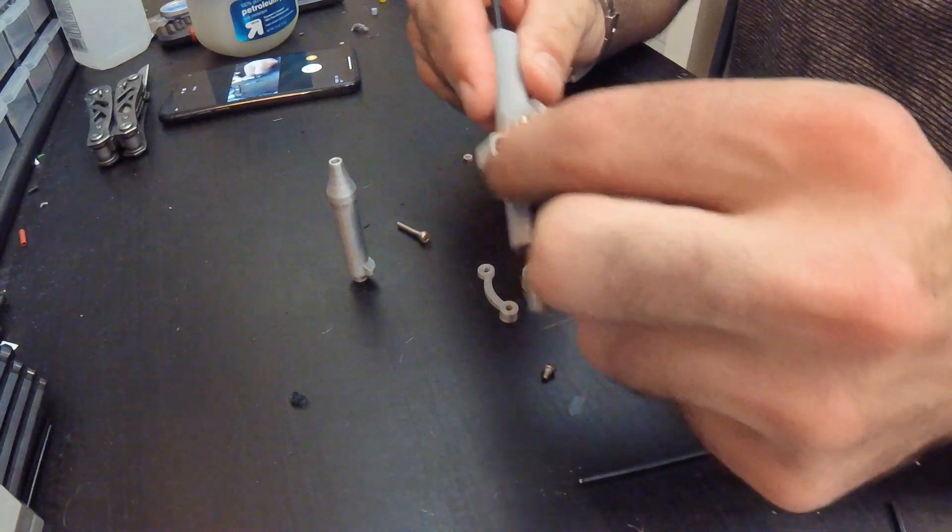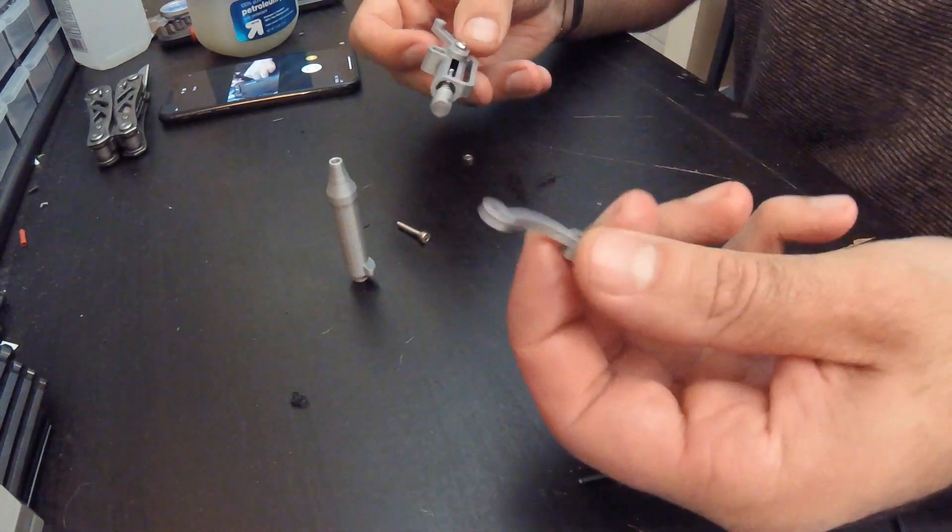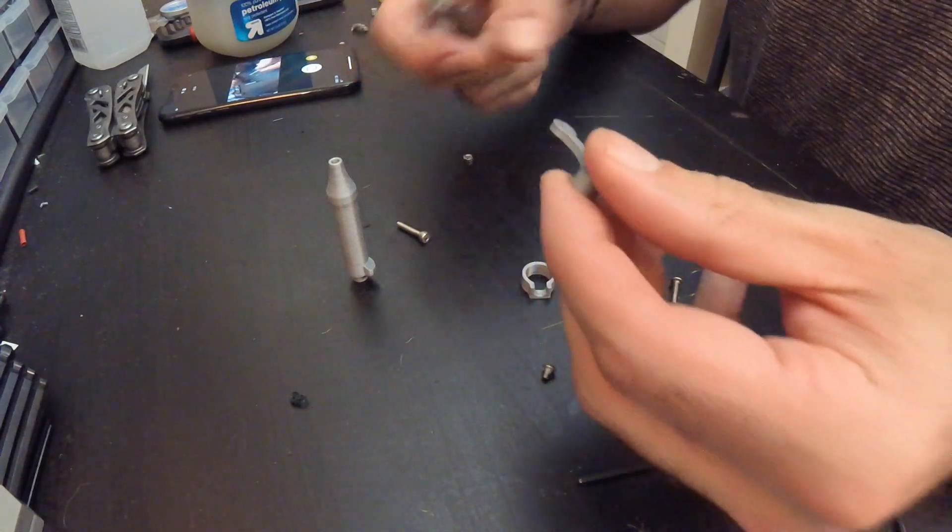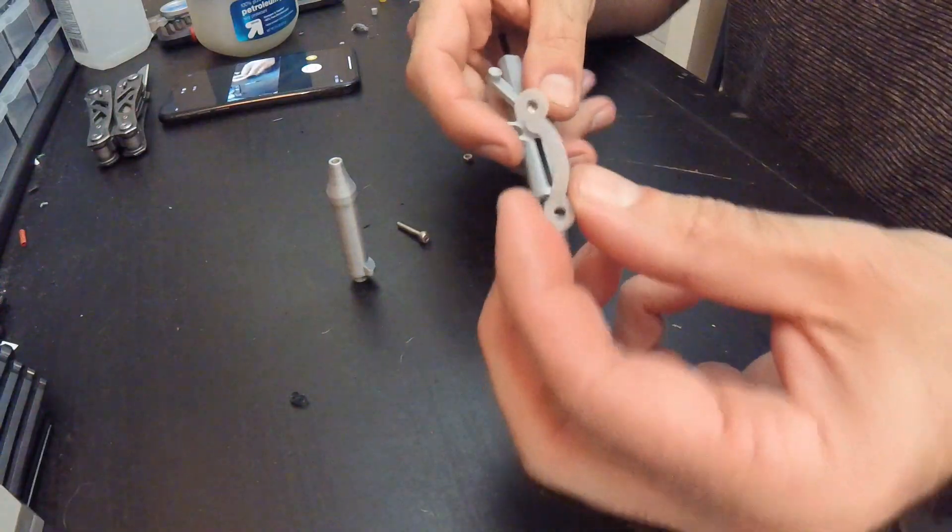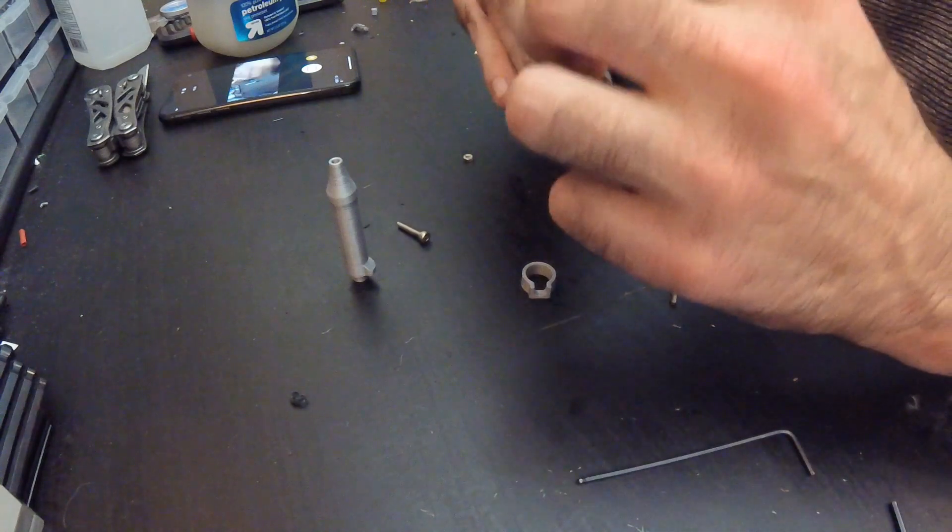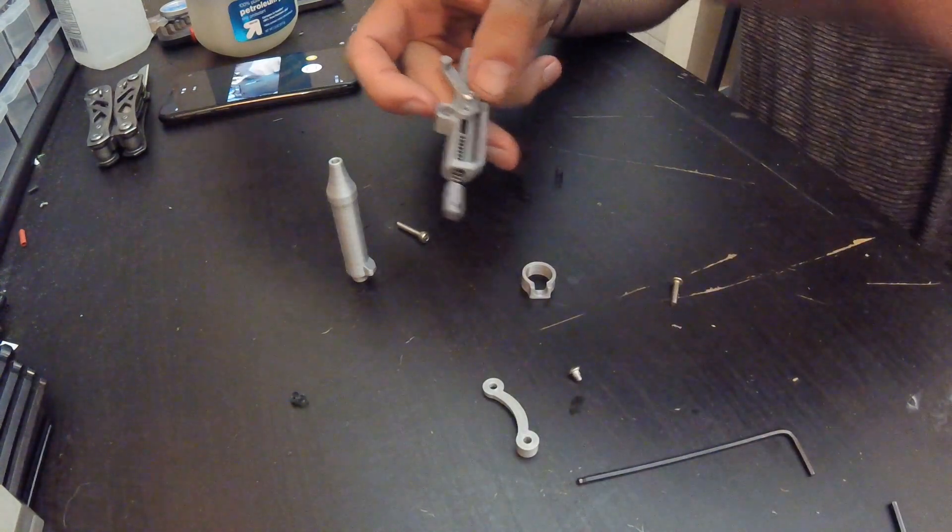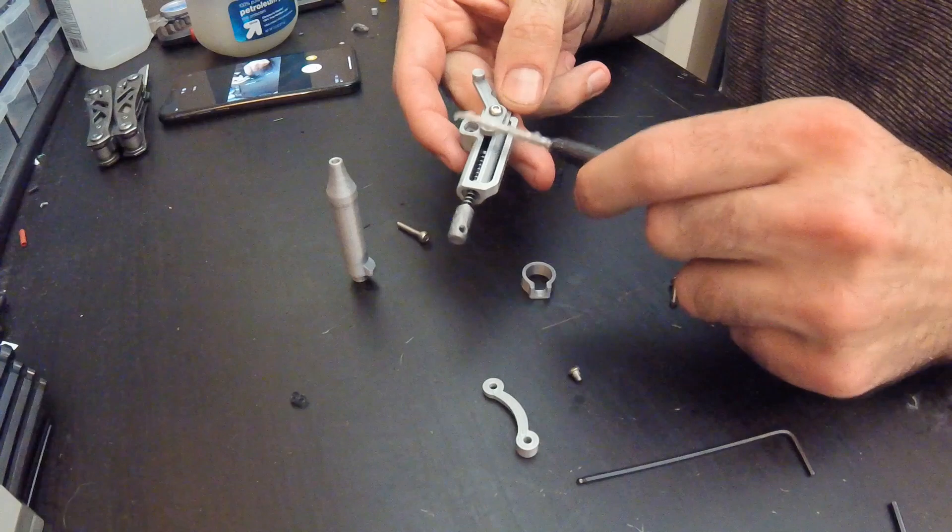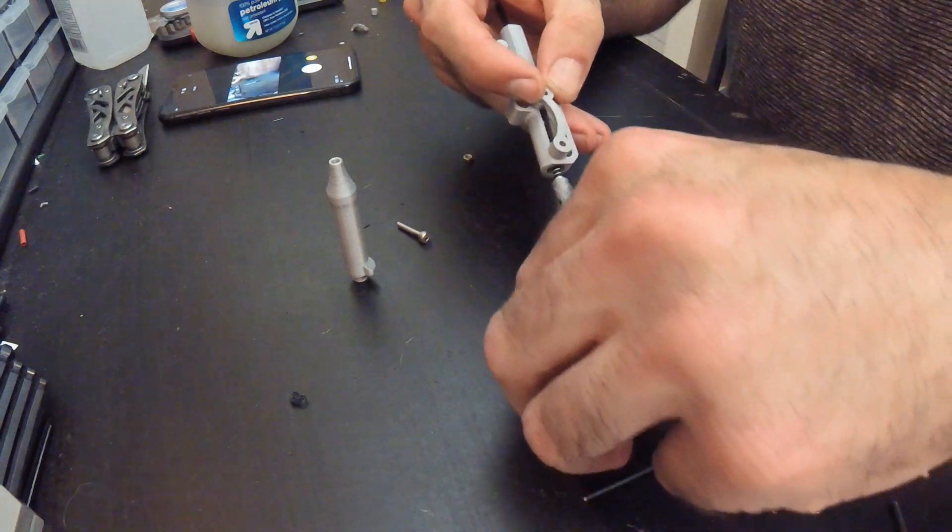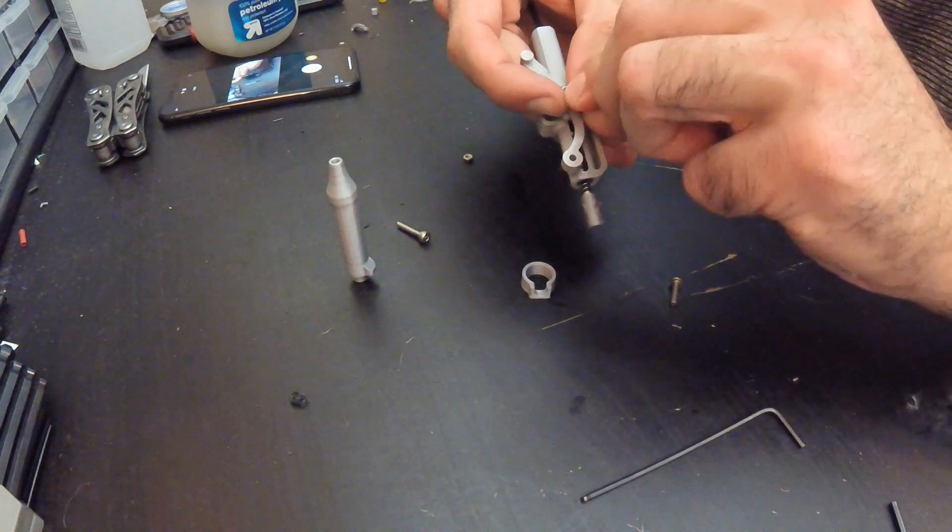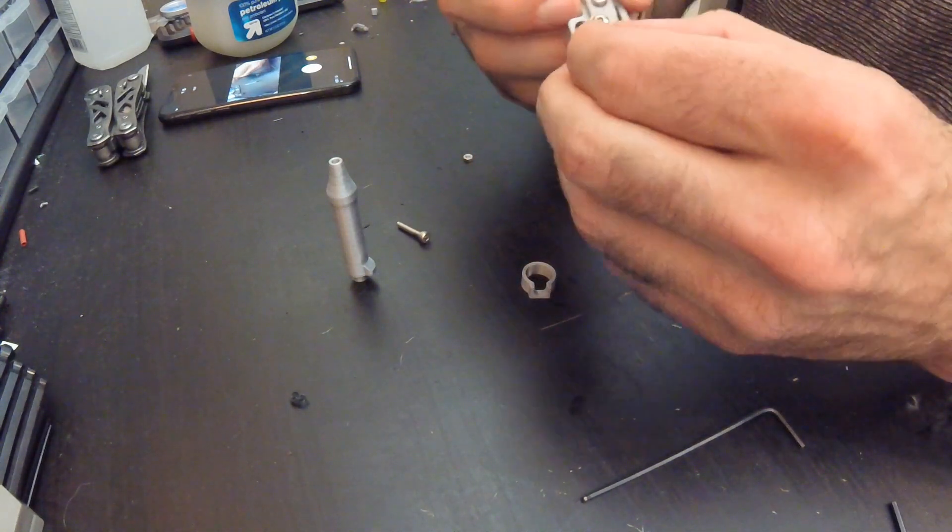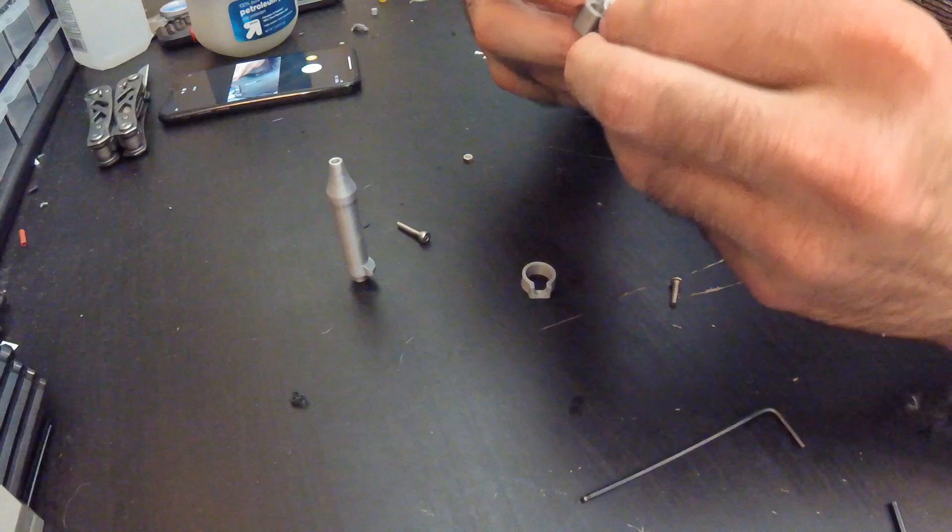So next we'll be putting on the—how would they call this in kinematics—I don't remember. This linkage. It goes just like that and then the barrel screws on to it. Put some Vaseline on it. So this gets screwed on like so.